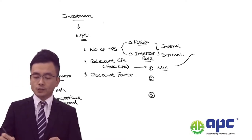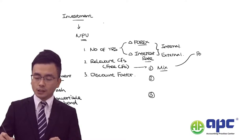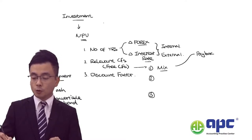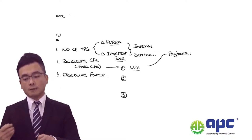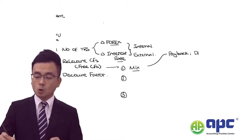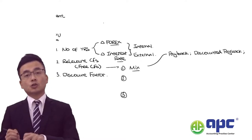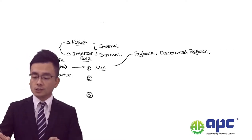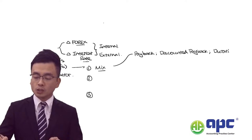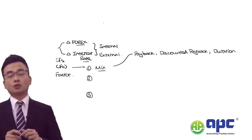For example, we will be looking at things like the payback period — how many years it takes to recover our initial investment. Alternatively, we will consider the time value of money effect, which means the discounted payback period. We may also consider the risks involved, which is why we need to calculate something called duration.